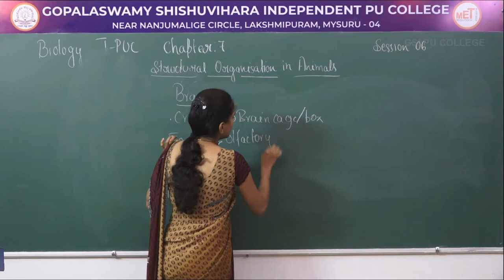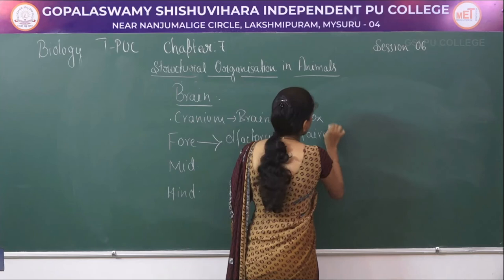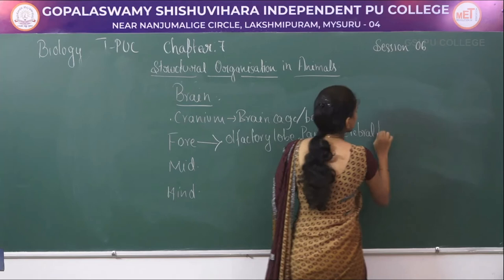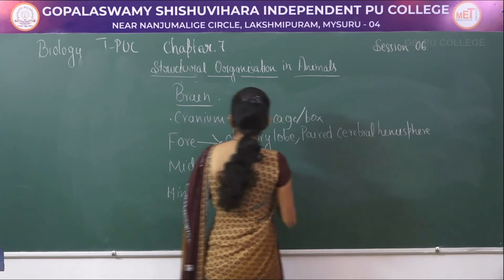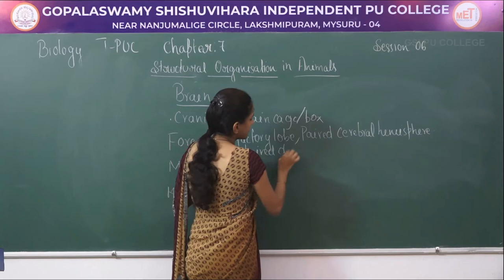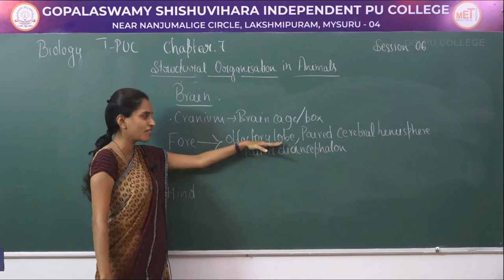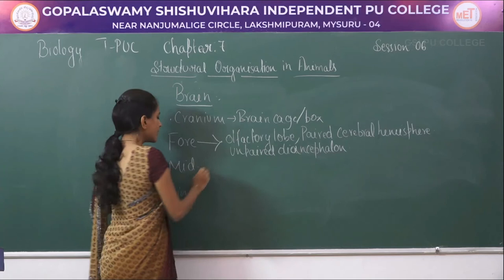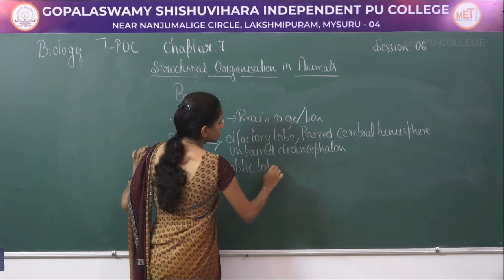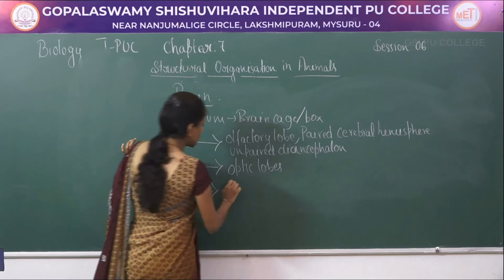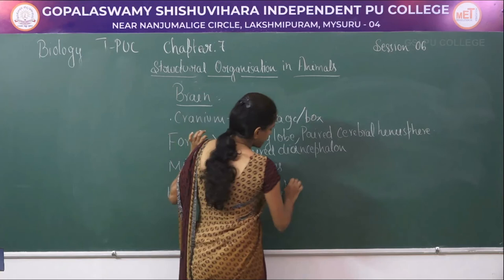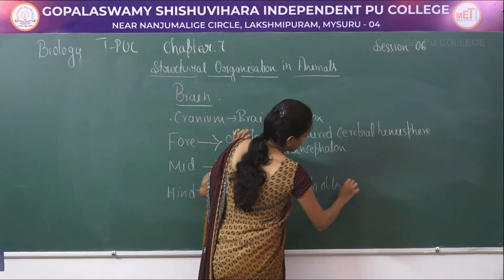The forebrain includes the olfactory lobe, paired cerebral hemispheres, and unpaired diencephalon. The midbrain includes the optic lobes. The hindbrain includes the cerebellum and medulla oblongata.